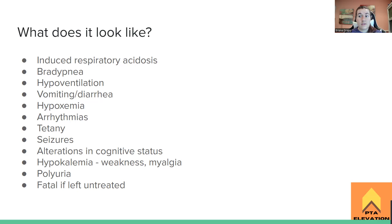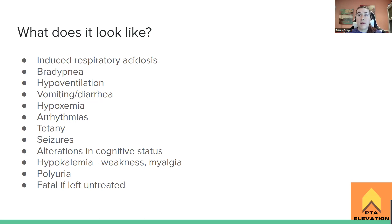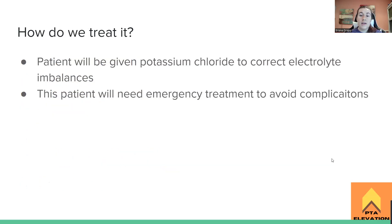Hypokalemia is the big one — the main electrolyte we're losing is potassium. A loss of potassium causes weakness and myalgia, so general fatigue and just not looking good. We'll also see polyuria — somebody urinating a lot, losing more electrolytes that way. Again, like metabolic acidosis, metabolic alkalosis is fatal if left untreated.